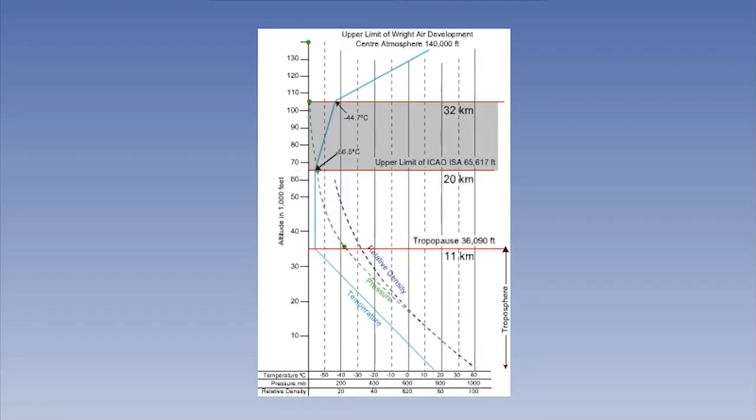From 20 kilometers and upwards to 32 kilometers, we have a gradual increase in temperature by 0.3 degrees Celsius per 1,000 feet, or 0.1 degrees Celsius per 100 meters. If you remember, this is the part of the stratosphere that contains the gas ozone, which causes the surrounding air to warm.